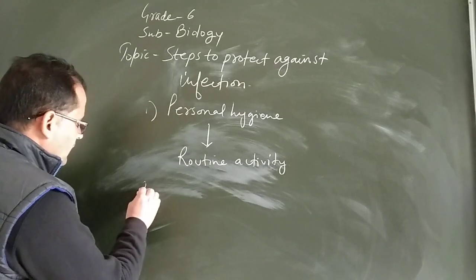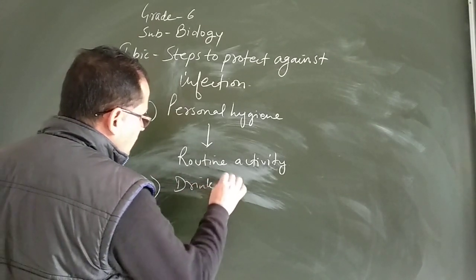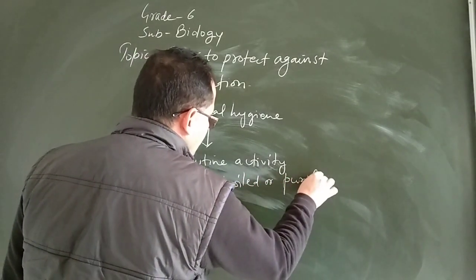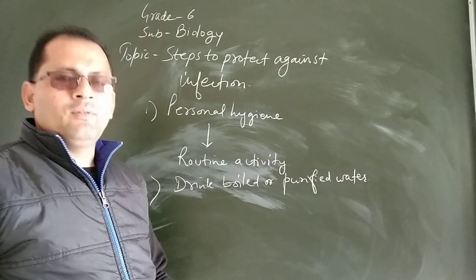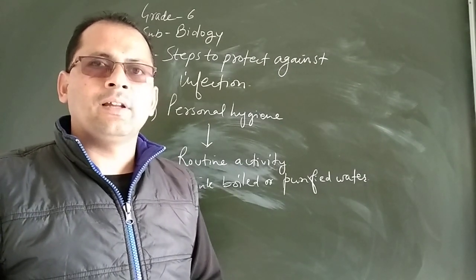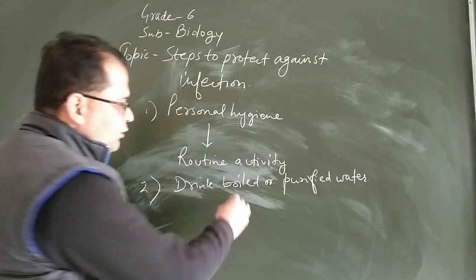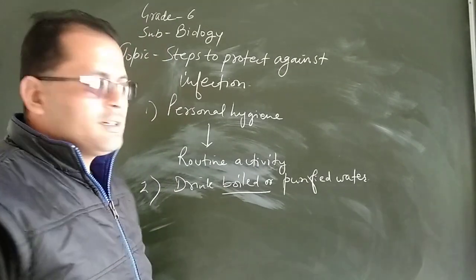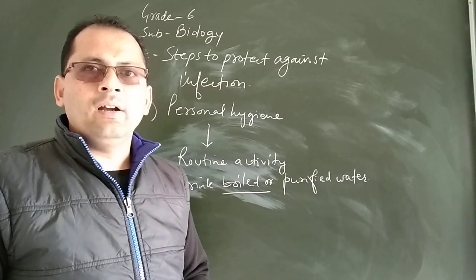The second step is to drink boiled or purified water. If you do not drink purified or boiled water, germs in the water will enter your body and make you diseased. Boiling kills the germs present in the water. Especially during the rainy season, you must drink boiled or purified water.